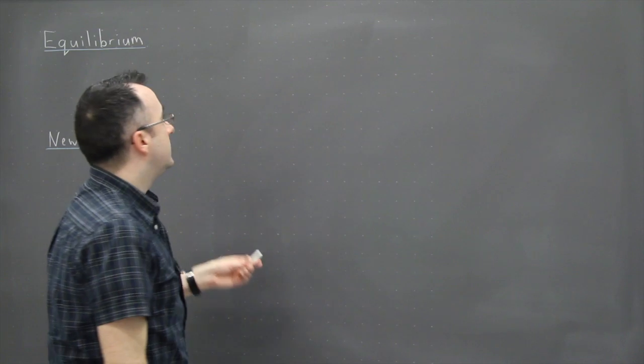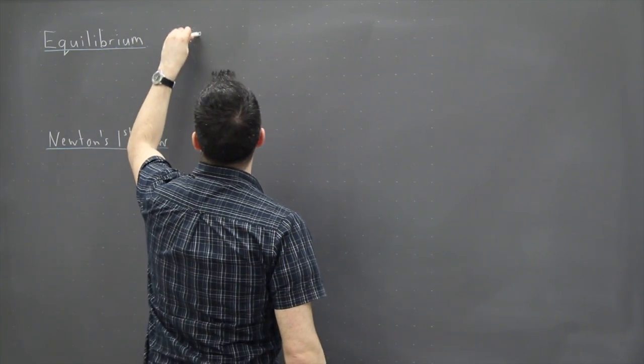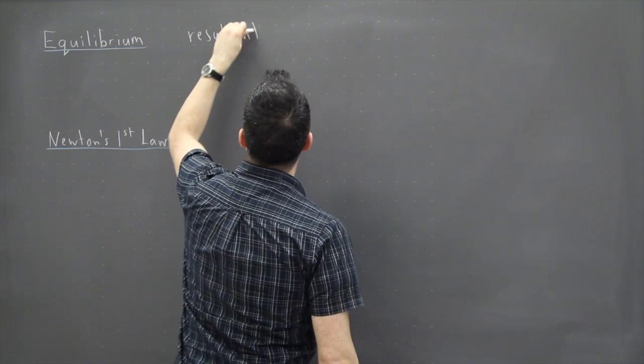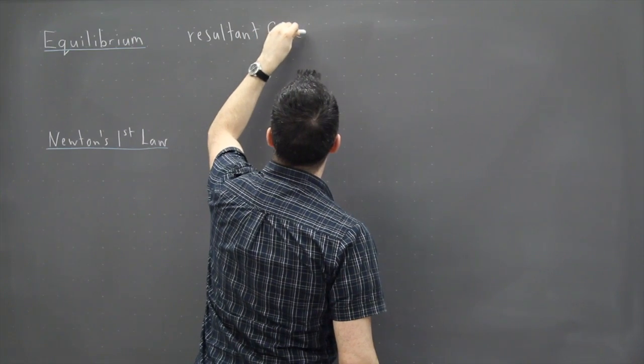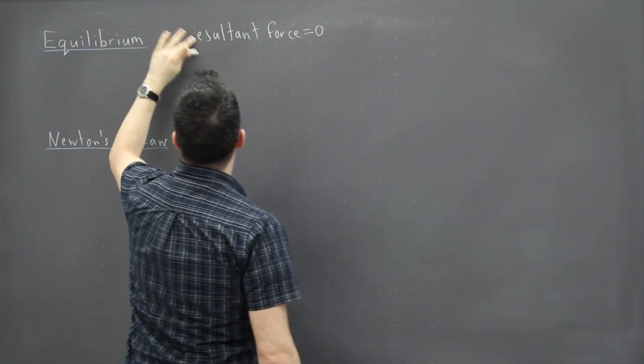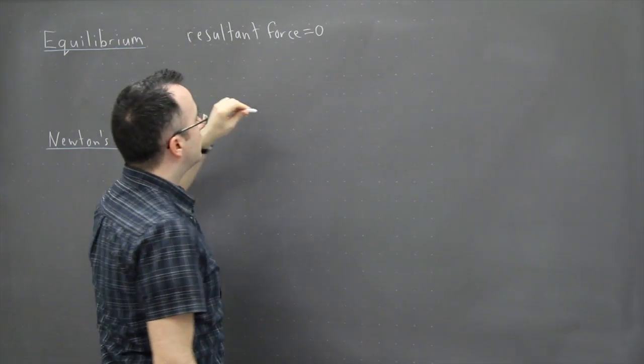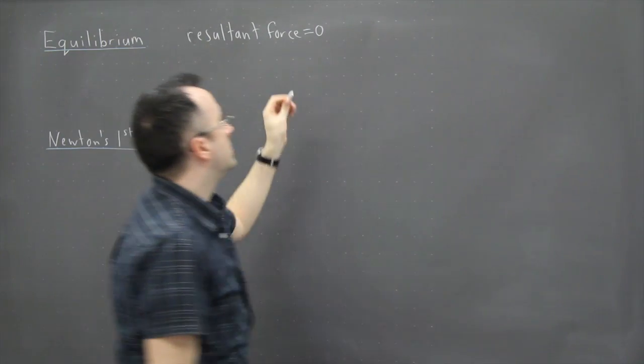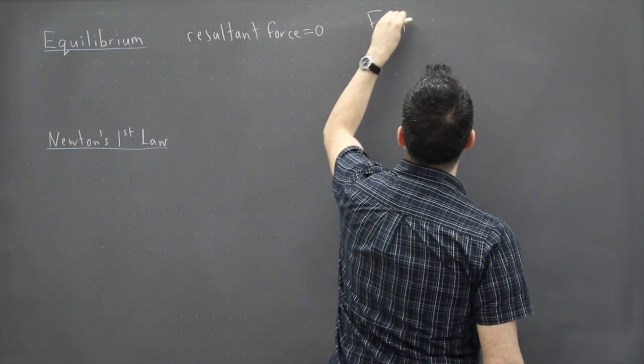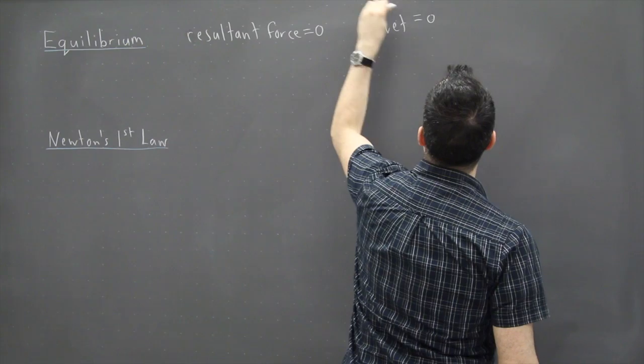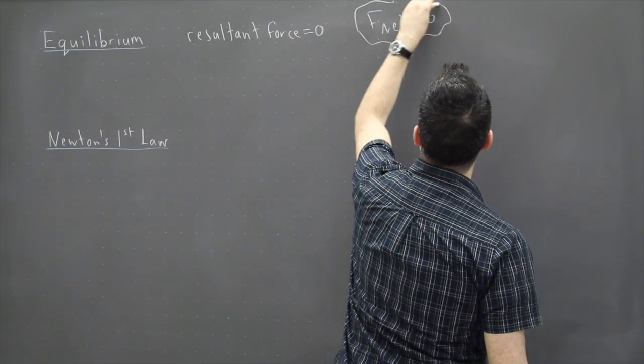Equilibrium is when the resultant force is zero, so resultant force equals zero. In other words, the net force equals zero, that's the key thing here.